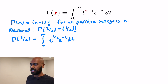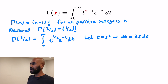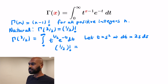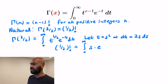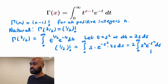This seems like a complicated integral, but to simplify things and avoid rational powers of t, let's substitute t equals s squared. If we do that, we get dt equals 2s ds. By substitution, the half factorial becomes the integral from 0 to infinity of s times e to the negative s squared times 2s ds, which is twice the integral from 0 to infinity of s squared e to the negative s squared ds.